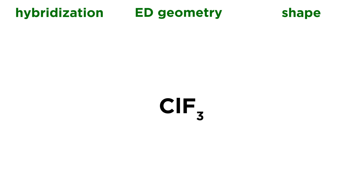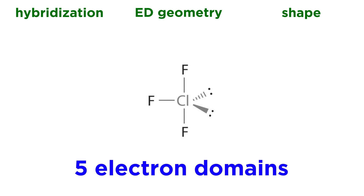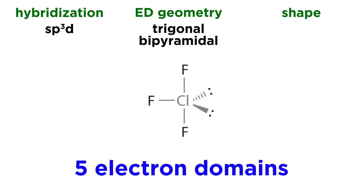Now let's look at chlorine trifluoride, ClF3 — an interhalogen compound that does indeed form. Drawing the Lewis dot structure: central chlorine atom with three bonds to fluorine and two lone pairs. Chlorine has seven valence electrons, so using three for sigma bonds to fluorine leaves four as two lone pairs. That gives a total of five electron domains — three bonding pairs and two lone pairs — so the hybridization is sp3d. Anytime we have an sp3d center, the electron domain geometry is trigonal bipyramidal.